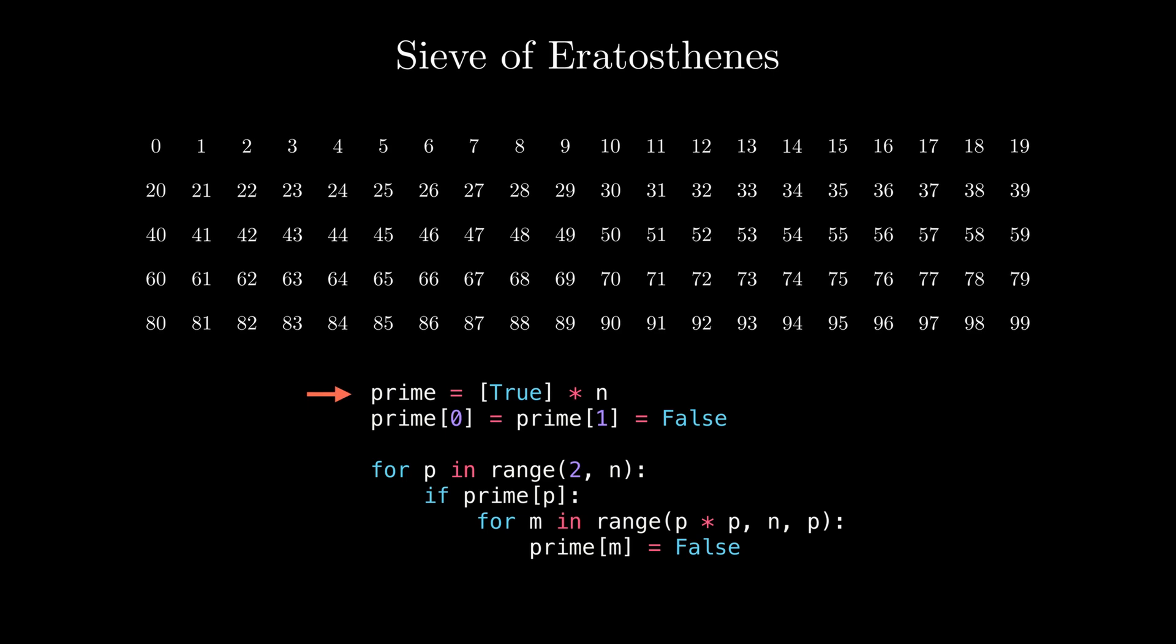We first create an array of 100 elements filled with true values. We then mark 0 and 1 as non-prime, so the first two elements of the array are set to false. After that, we iterate over all the numbers starting from 2 and going up to 100.